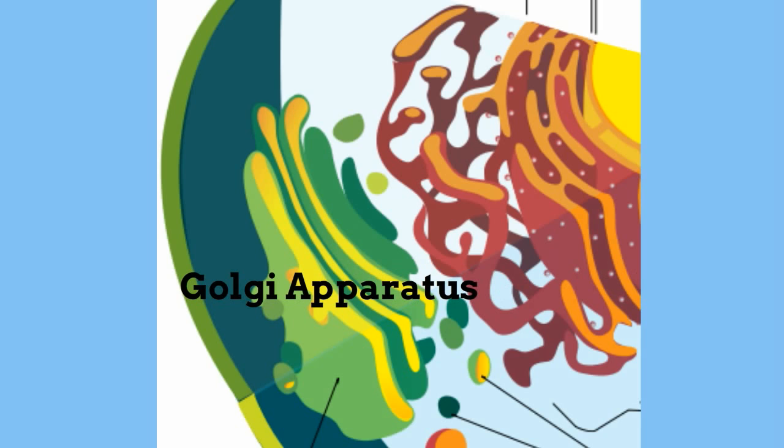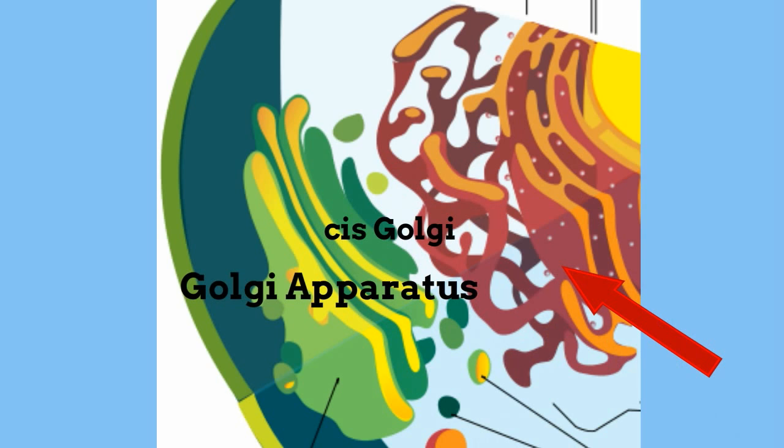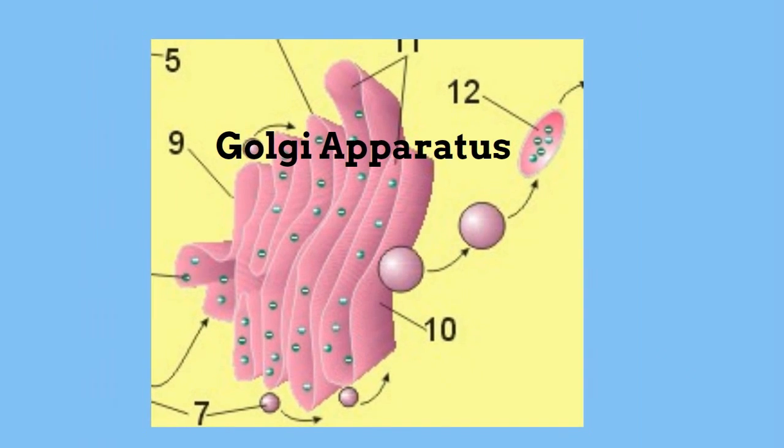But first, where is the Golgi Apparatus located? It is located by the ER. The side closest to the ER is called the Cis Golgi and the outside is called the Trans Golgi. It is found in all eukaryotic cells, so it is found in plant and animal cells.